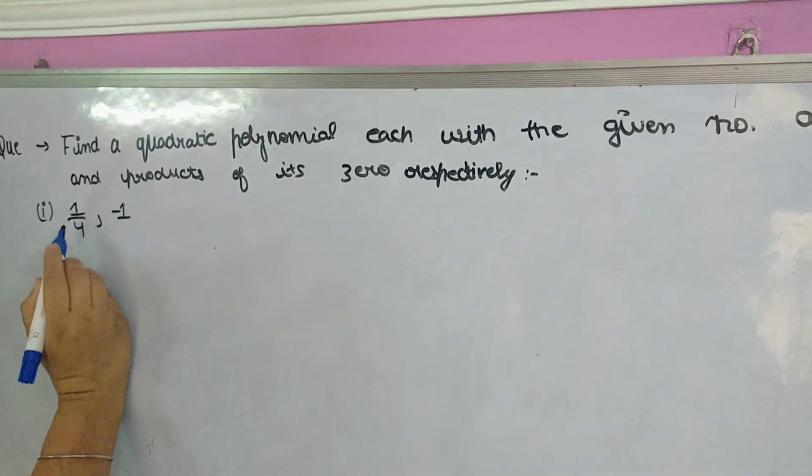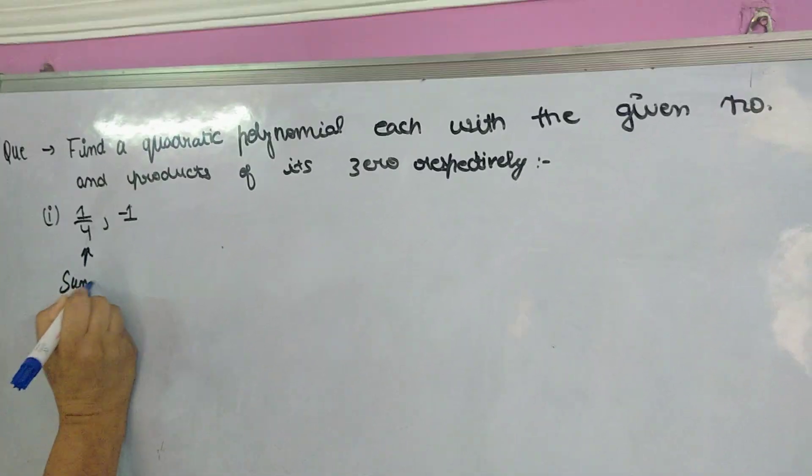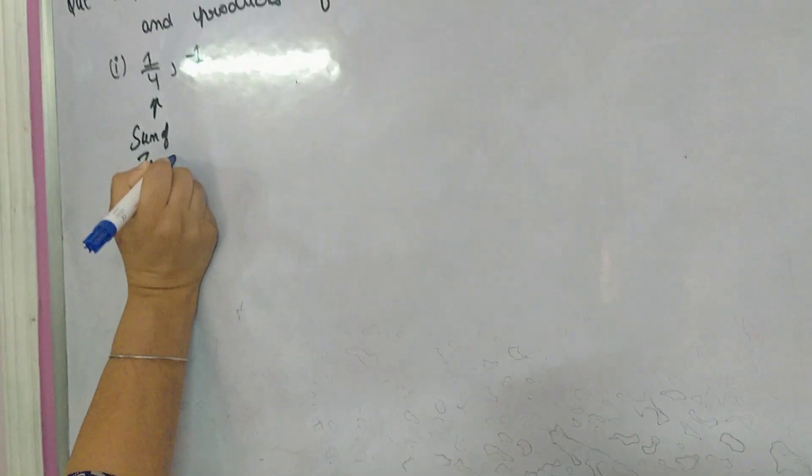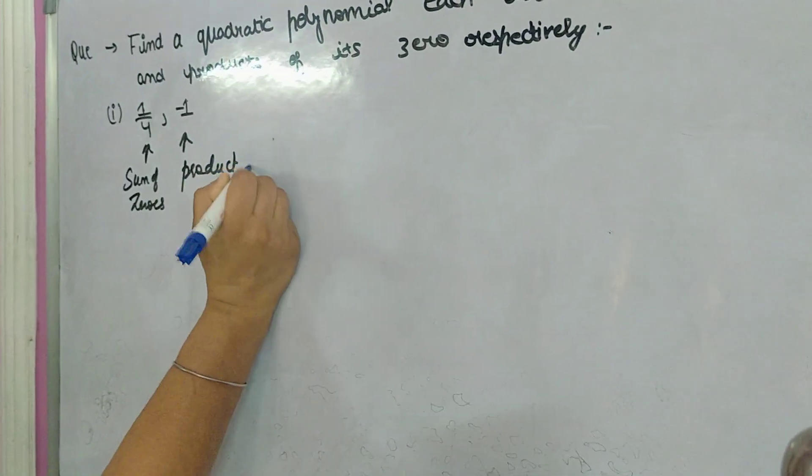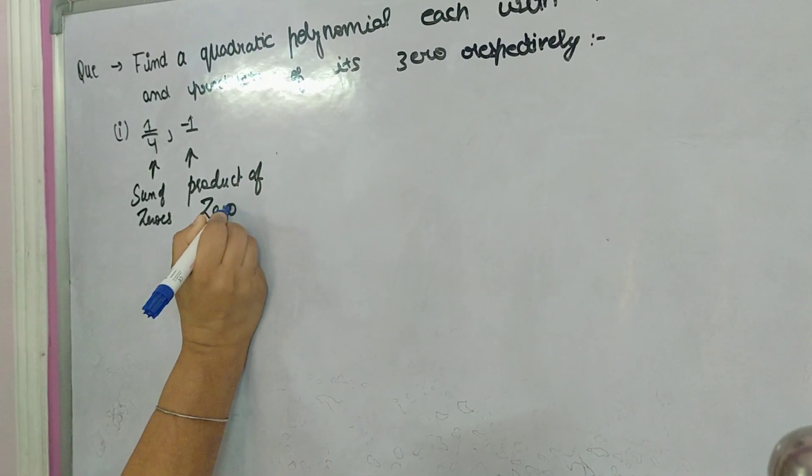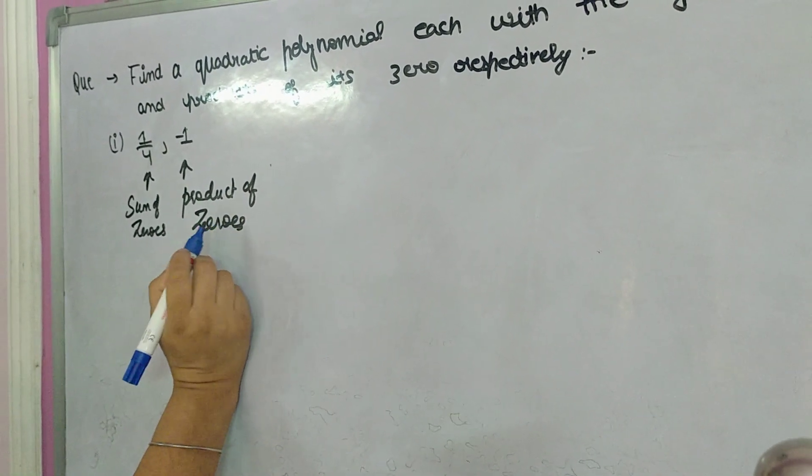This is given sum of zeros, this is given as product of zeros. There is a direct formula for this, but I am telling you a simpler method.